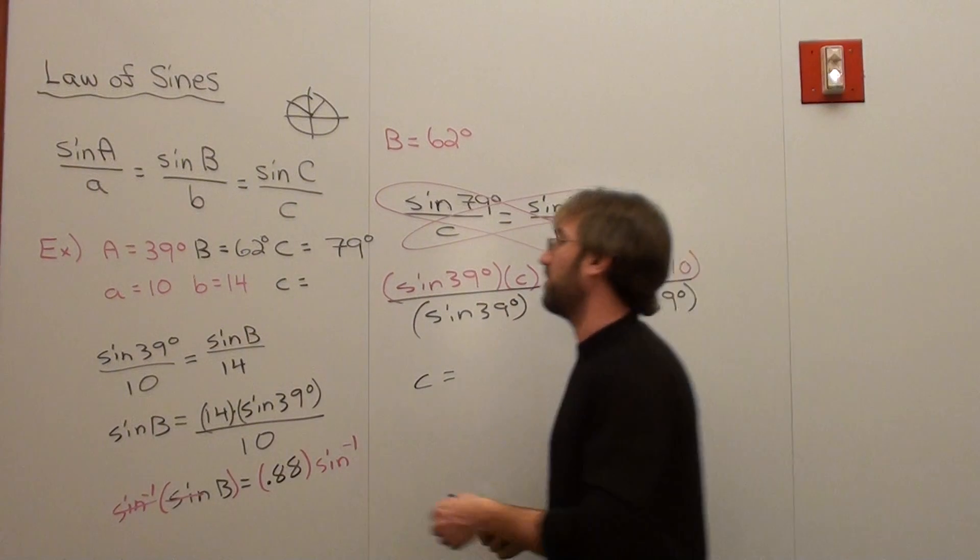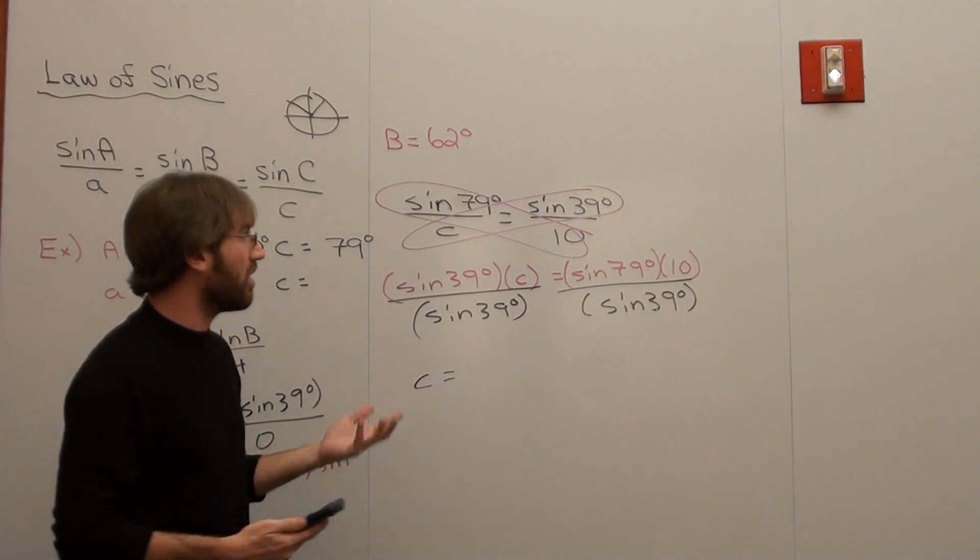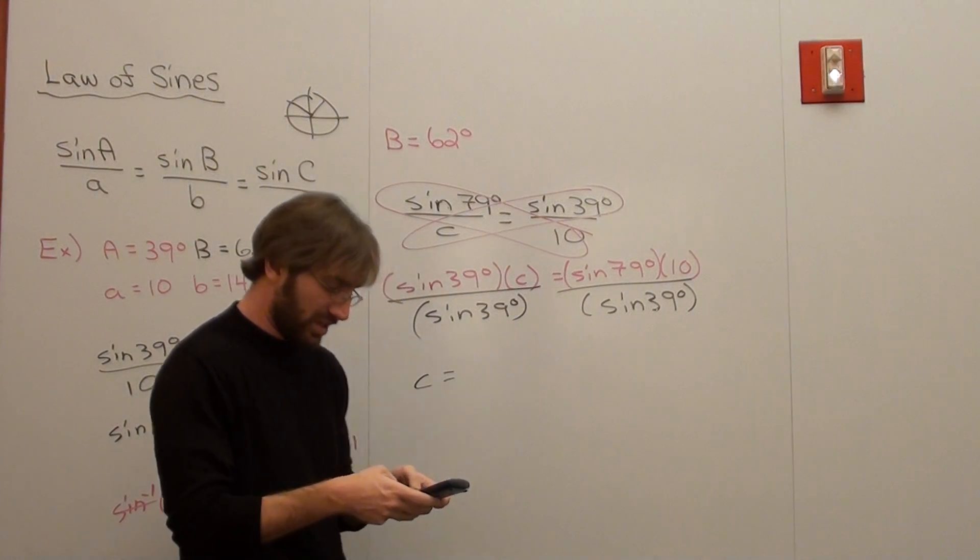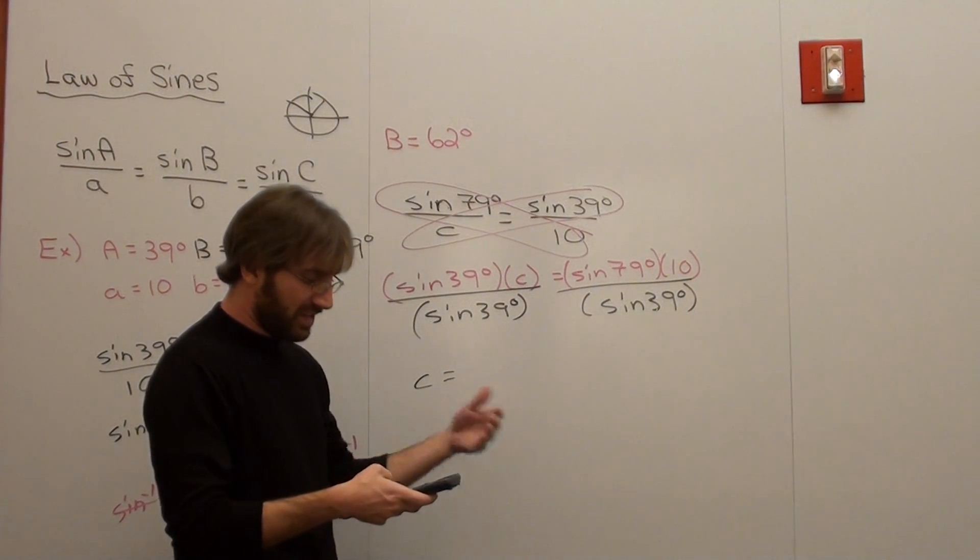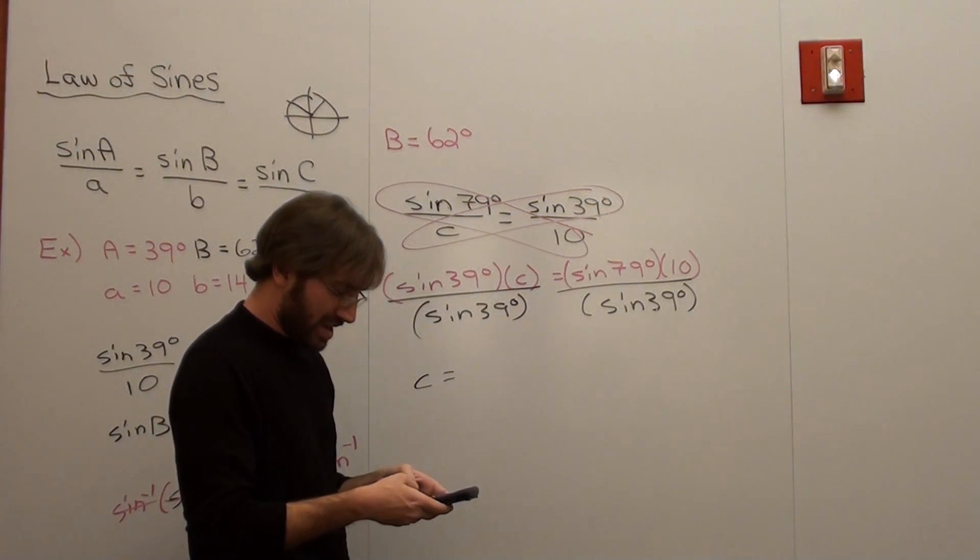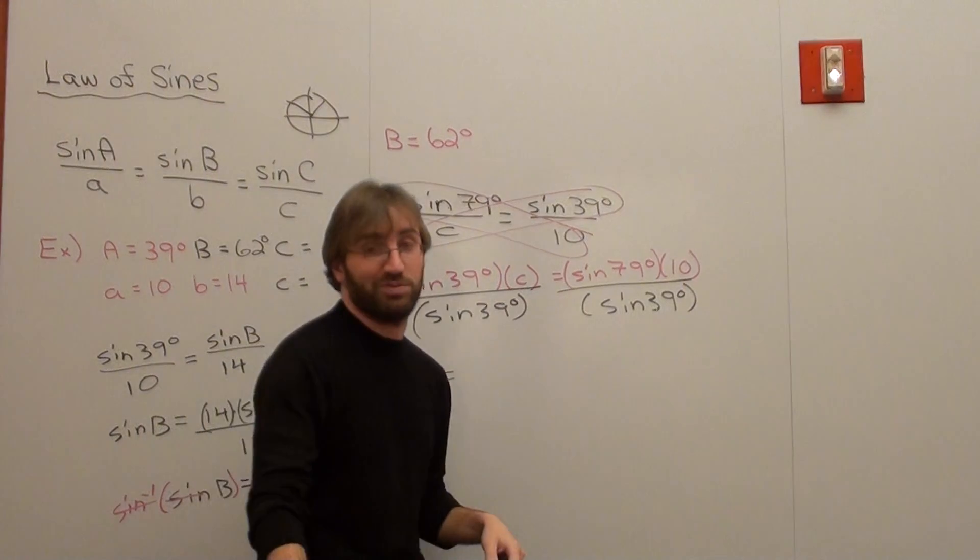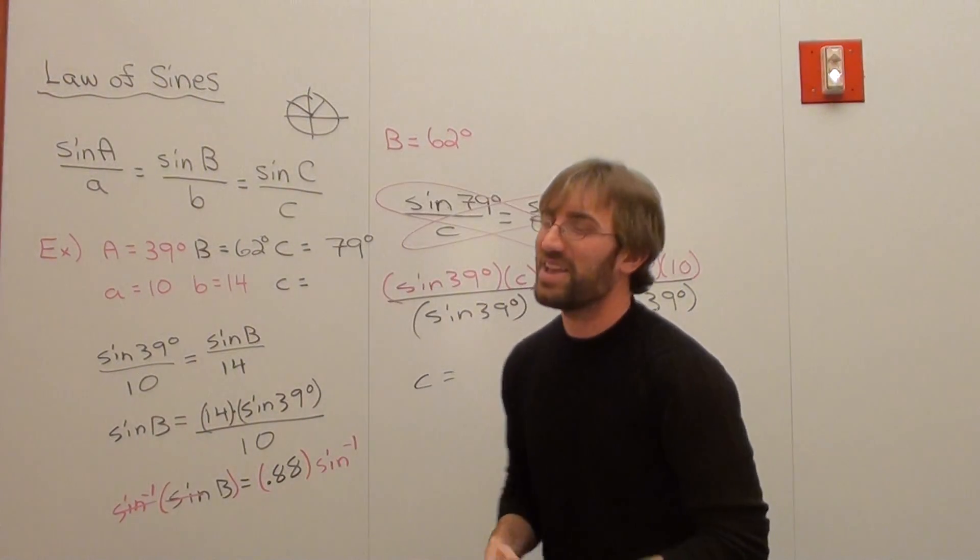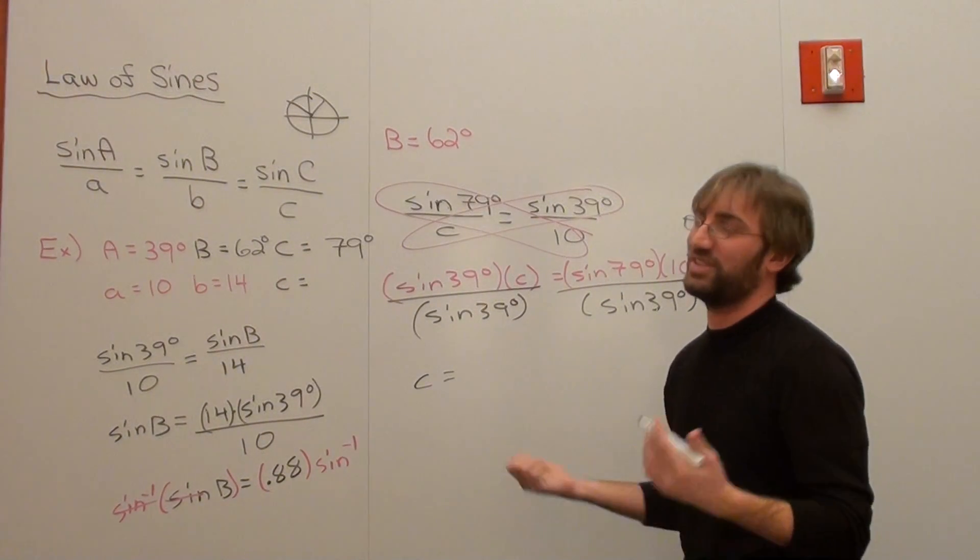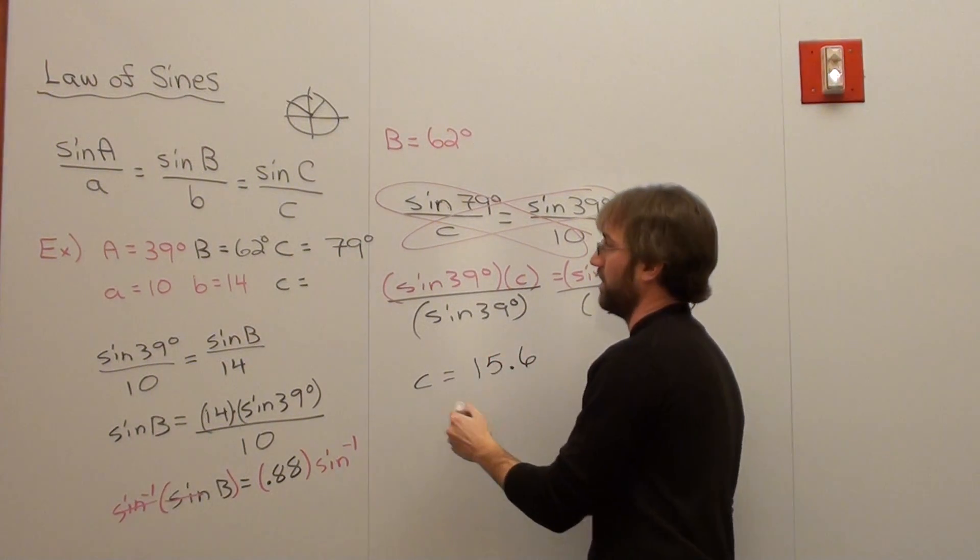If you did something smaller than 14, then you know you did it wrong. So it's just a good reference point. Sine of 79 degrees is about 0.98. Times 10. And I'm going to divide by the sine of 39 degrees. Two parentheses to close it off. And I get 15.59, which is 15.6 when I round it. So that's approximately 15.6.